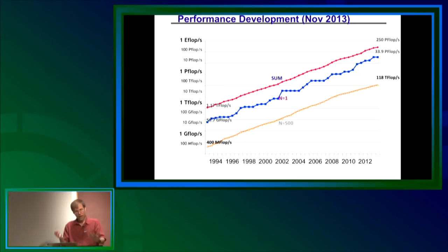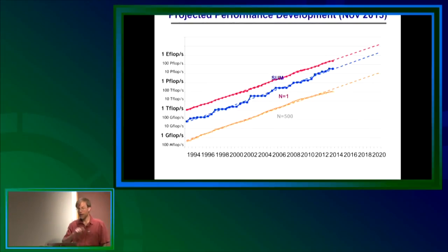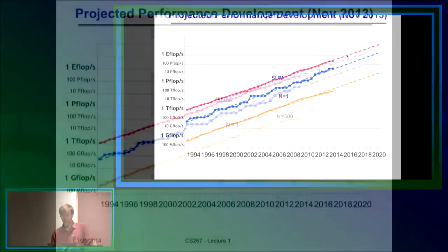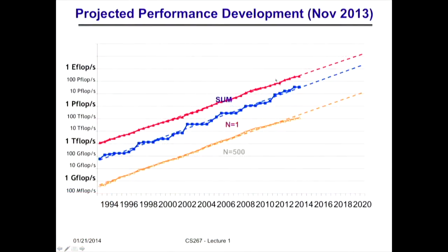Drawing straight lines on the log-scale curve to make predictions: when do we hit an exaflop, the DOE target? The projection shows number one hitting an exaflop around 2018 — that is their target. But as I said, this assumes you can afford the electricity bill, which is way over $20 million a year. DOE is hoping for a new technology. We'll see what happens.